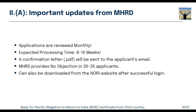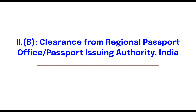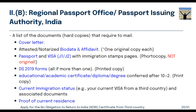Proof of address can be a bank statement, credit card statement, or lease agreement. MHRD applications are reviewed monthly and the expected processing time is 8 to 10 weeks. After clearance, they will send confirmation to your email and you can also download it from your login on the MHRD website. To save time, do all three clearance applications in parallel — don't wait for one before starting the next.